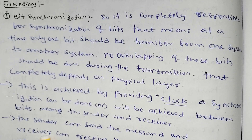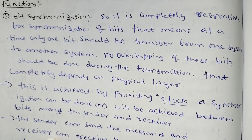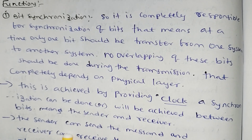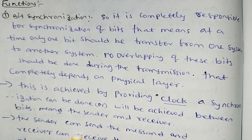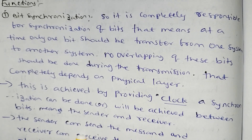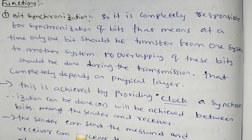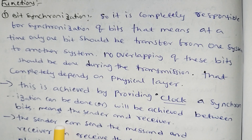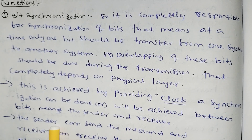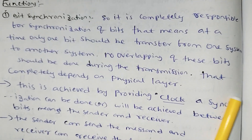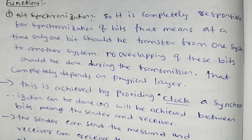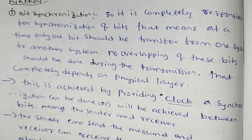Synchronization means bits are transferred one after another from one system to another without overlapping during transmission. This synchronization is achieved by providing a clock. The sender and receiver use a clock so that the sender can send the message and the receiver can receive it.